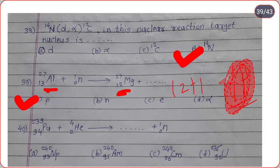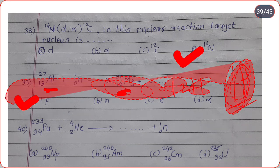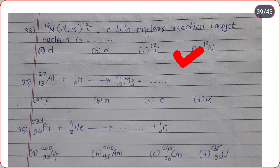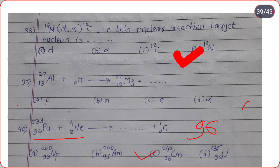The next: plutonium-239 (atomic number 94) plus alpha particle (He-4, atomic number 2) gives dot-dot plus neutron. Balancing: atomic number 94 plus 2 equals 96; element with atomic number 96 is correct option C. Mass number: 239 plus 4 equals 243, minus 1 for neutron gives 242. So the product is element 96 with mass number 242, option C.